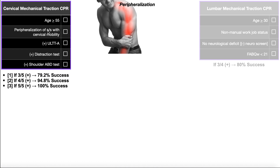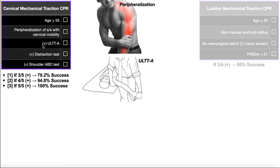Those signs and symptoms can include pain — generally shooting or burning neural-type pain — numbness, or any kind of paresthesia. If they have that with cervical mobility, that's a check for criterion two. The third criterion is a positive upper limb tension test A, which biases the median nerve — the ULTTA. If that test reproduces their radicular symptoms or pain, that's a check.